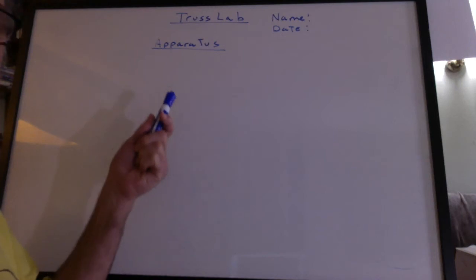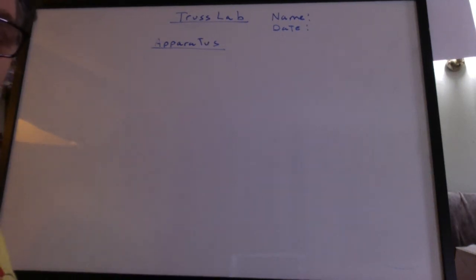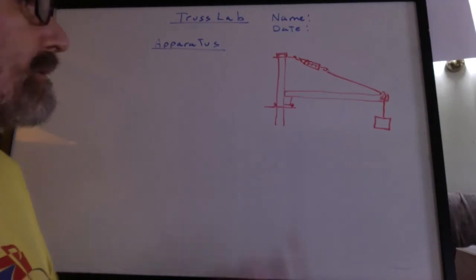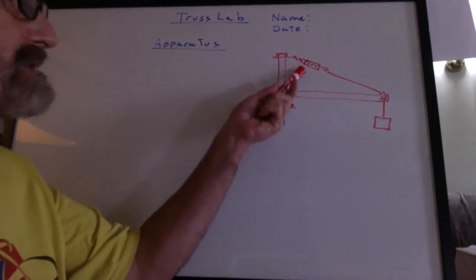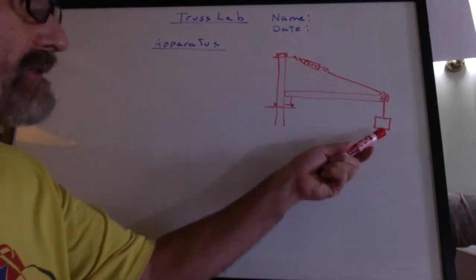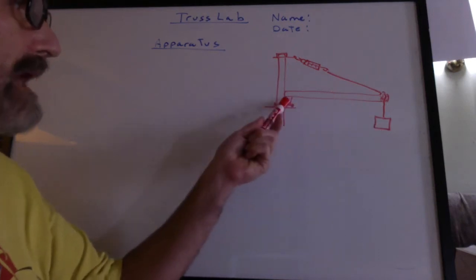You have to have a diagram of the apparatus, not just the force vector diagram. We have here the door, the spring scale, the string, the binder clip, the weight, the meter stick, the block of wood, and the clamps.